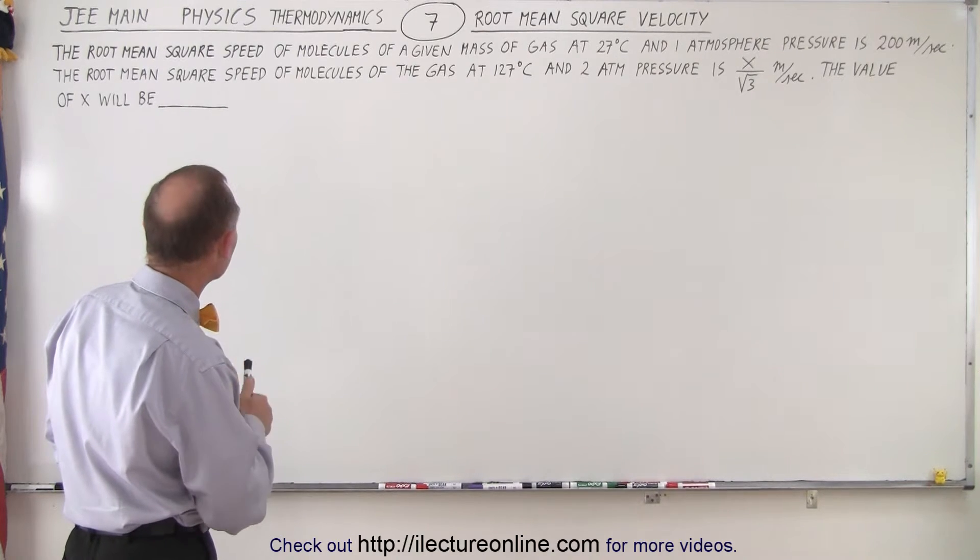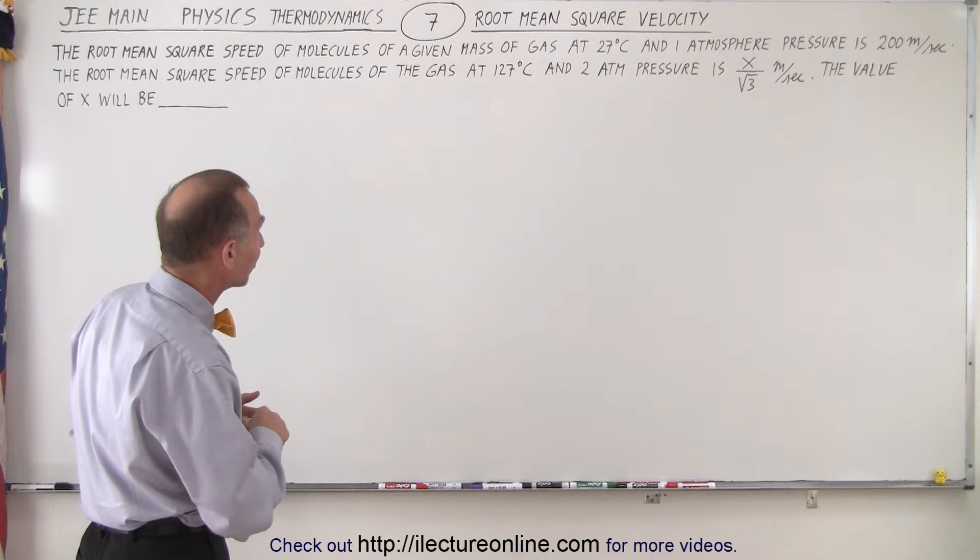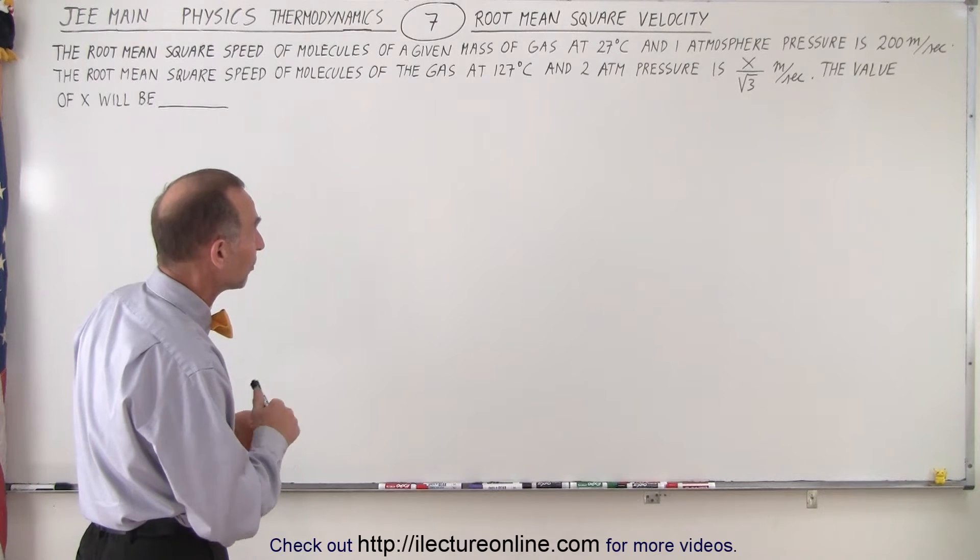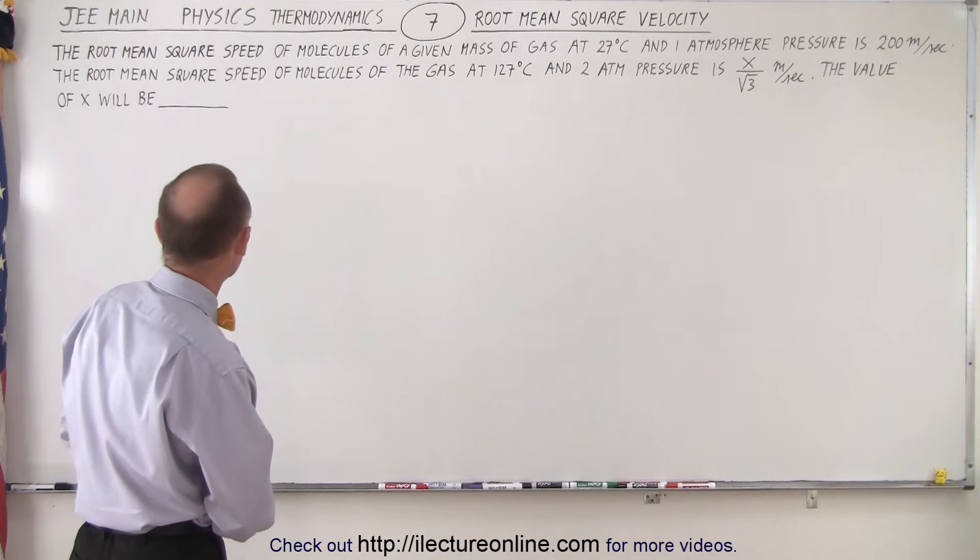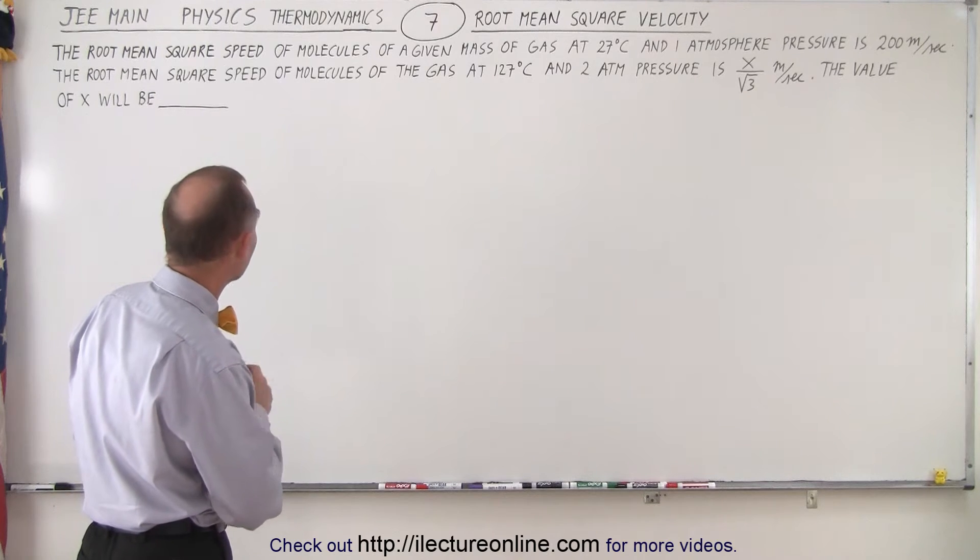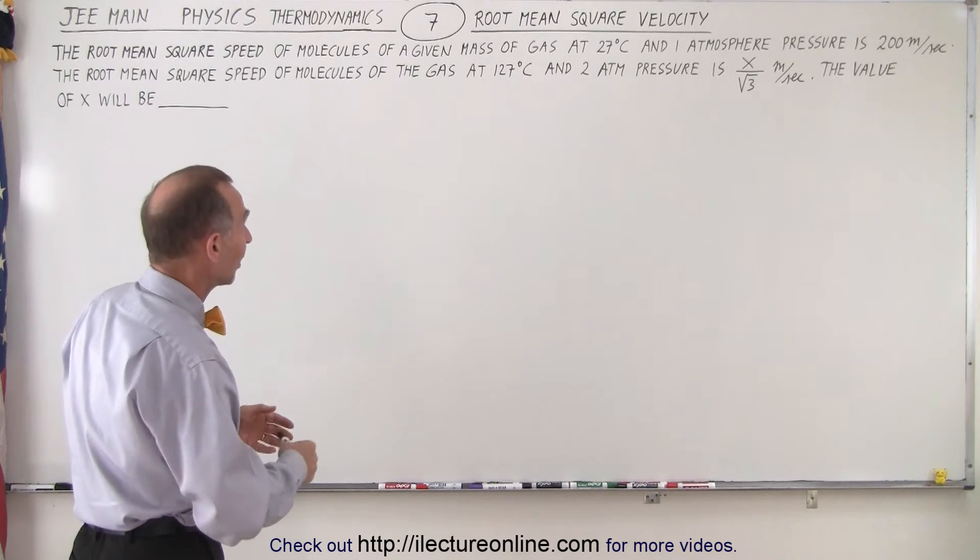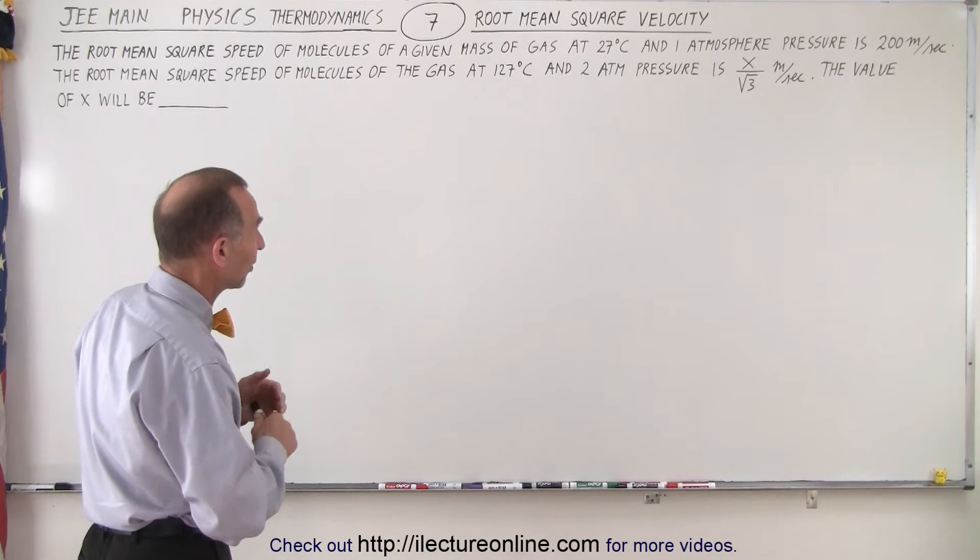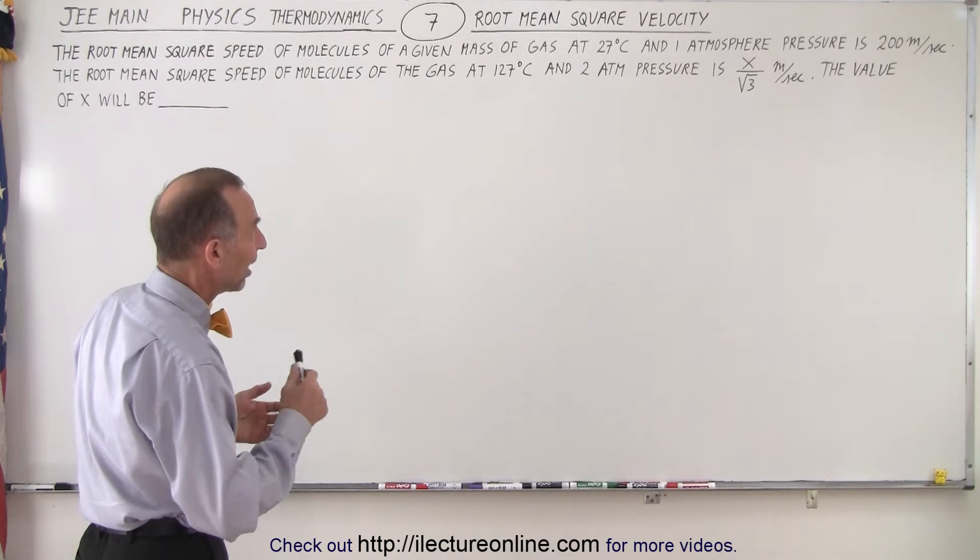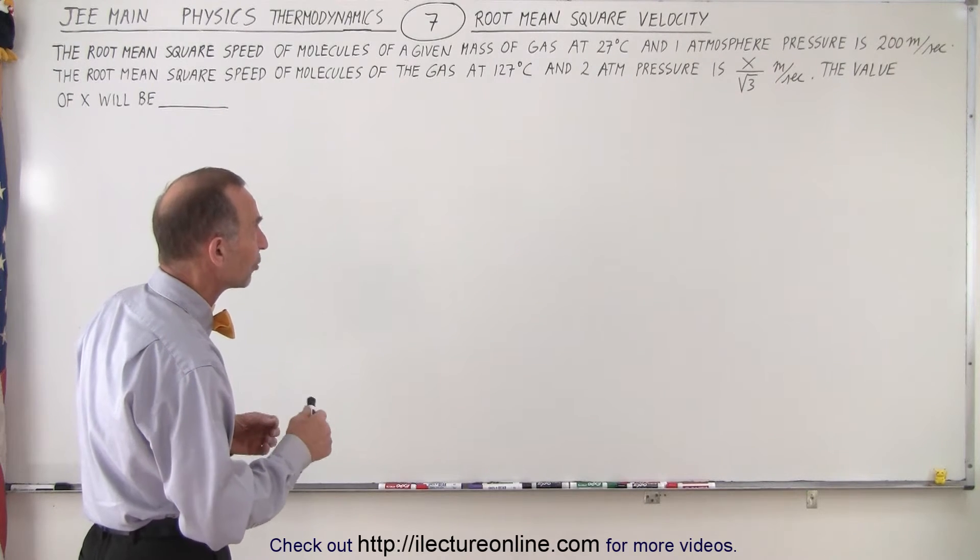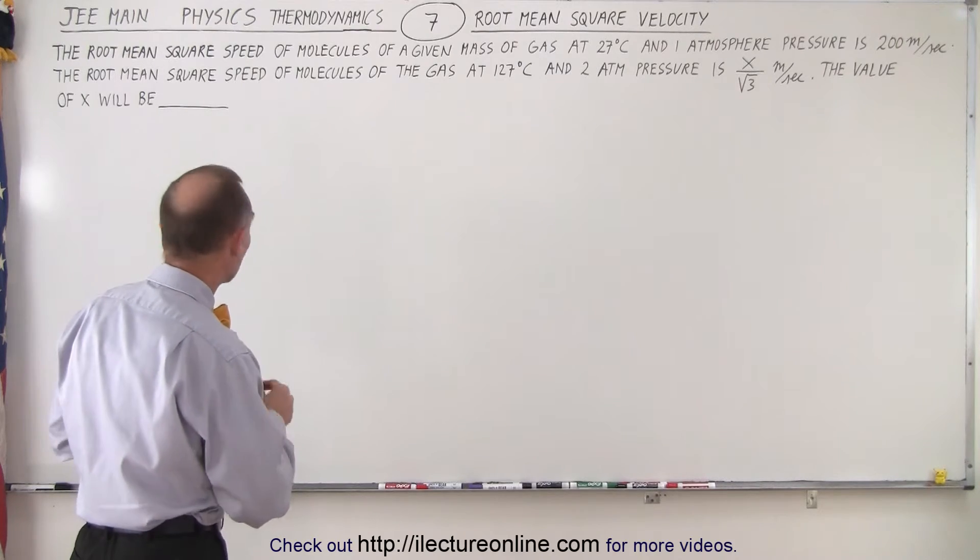The root mean square speed of molecules of a given mass of gas at 20 degrees Celsius and 1 atmosphere pressure is 200 meters per second. The root mean square speed of molecules of the same gas at 120 degrees Celsius and 2 atmosphere pressure is x over the square root of 3 meters per second. The value of x will be,